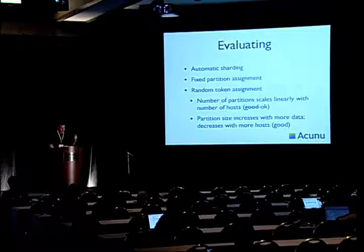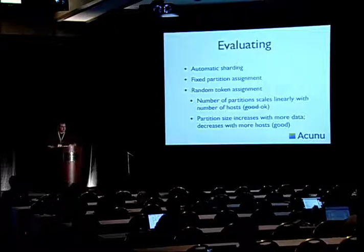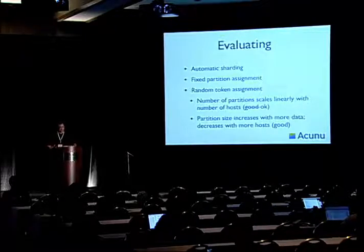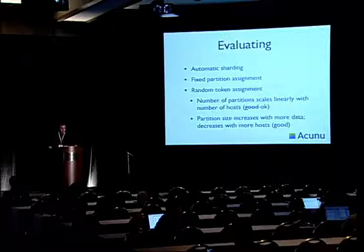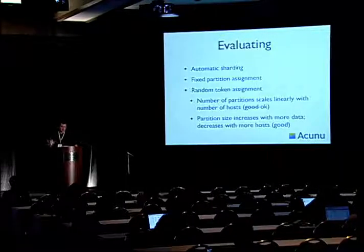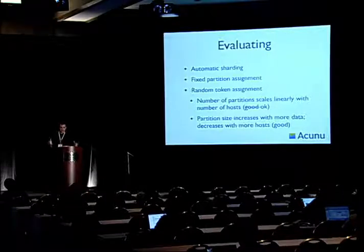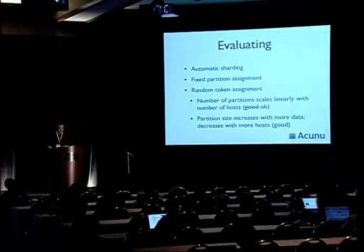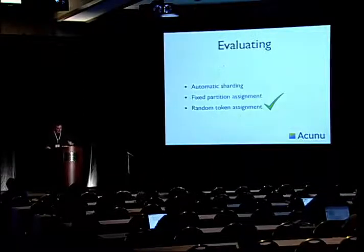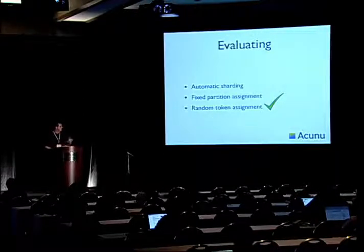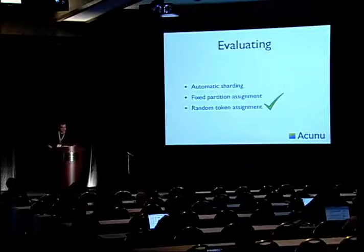Finally, random token assignment: we calculate T random tokens for each node, and T new random tokens for each joining node after that. This means the number of partitions scales linearly with the number of hosts — which is not ideal, but it's okay. It's better than scaling with the size of the data. And the partitions themselves will grow as more data is added, but they'll decrease as we add more hosts — that's a good property. All in all, that's really the right balance for Cassandra, and that's what we've implemented.